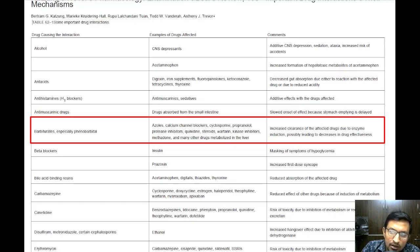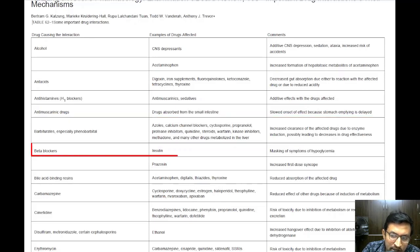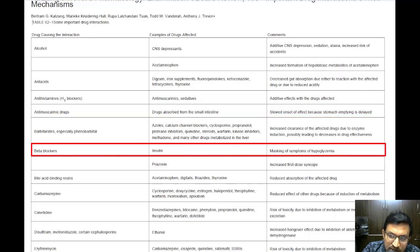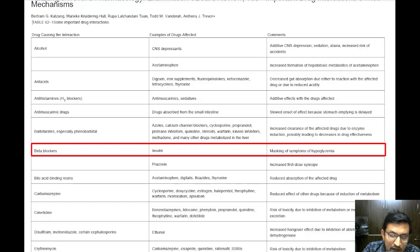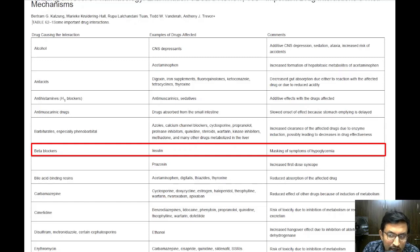The fifth important drug interaction involves beta blockers, commonly used for heart conditions and hypertension. Beta blockers can interact with insulin, which is used to manage diabetes. Specifically, beta blockers can mask the symptoms of hypoglycemia — low blood sugar — which is a potential side effect of insulin. This can make it difficult for patients to recognize when their blood sugar levels are dangerously low.